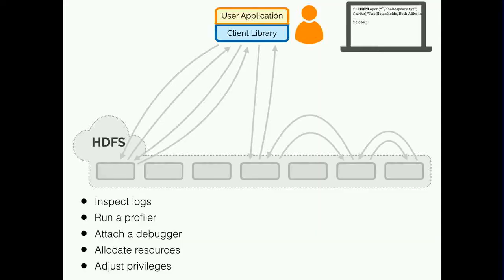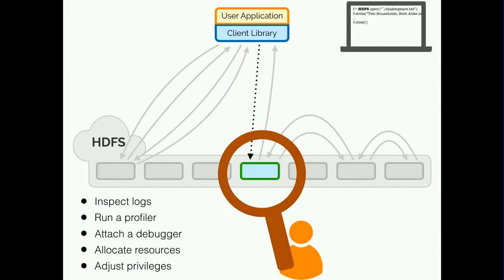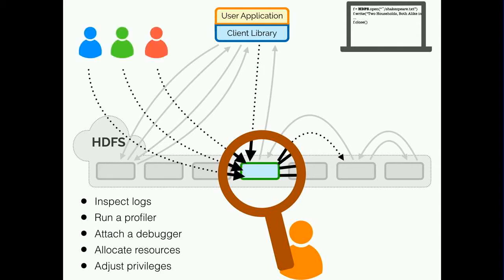Unfortunately, this is not the case for a distributed system. We could certainly try some of these tools — we could inspect our local client, for example. But all we might see is that the client is waiting for a response from HDFS. We could peek inside one of the HDFS processes, but again this might tell us nothing, because it can only show us a narrow slice of that end-to-end execution. At the same time, we would have to disentangle information relevant to our execution from potentially many other executions from many other users.